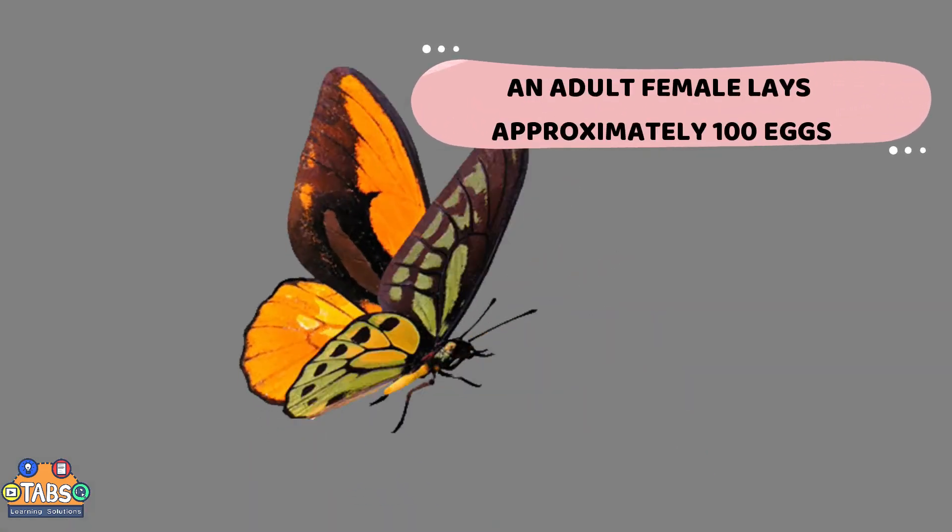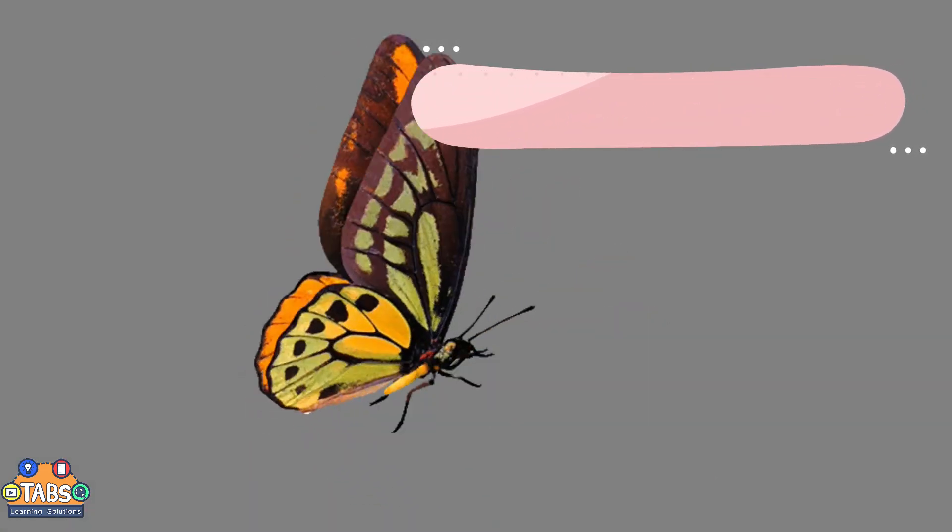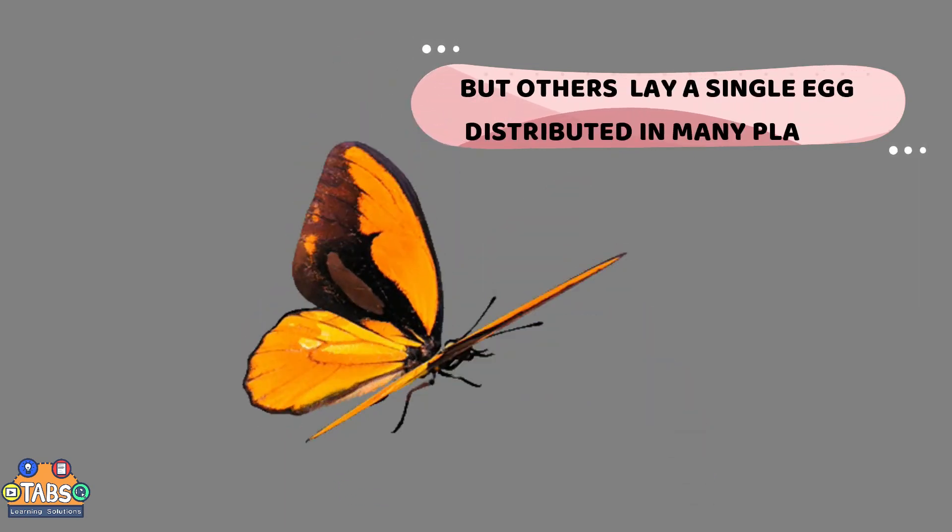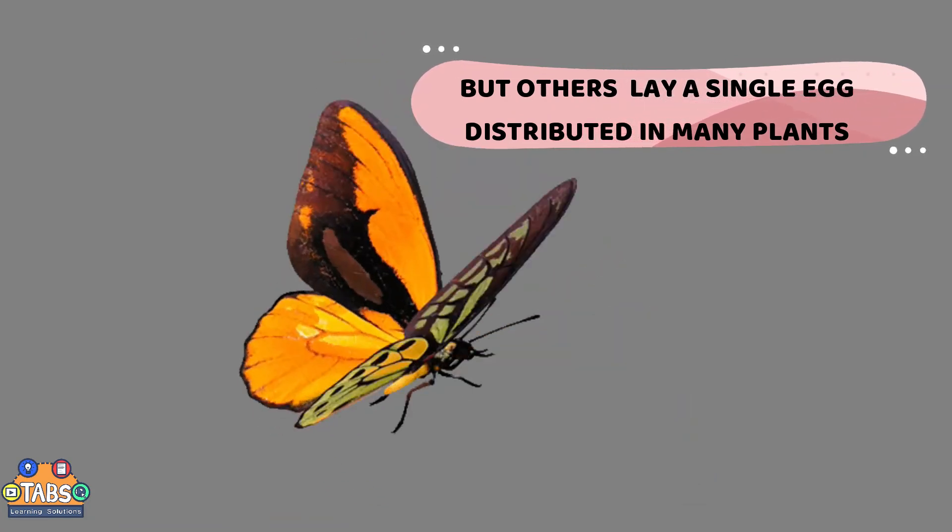An adult female lays approximately 100 eggs. Some butterflies lay eggs in groups, but others lay a single egg distributed in many plants.